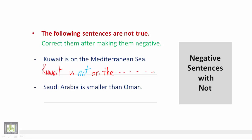The second sentence: 'Saudi Arabia is smaller than Oman.' Of course, this is also a wrong sentence in meaning and we want to make it negative. So we say: 'Saudi Arabia is not smaller...'